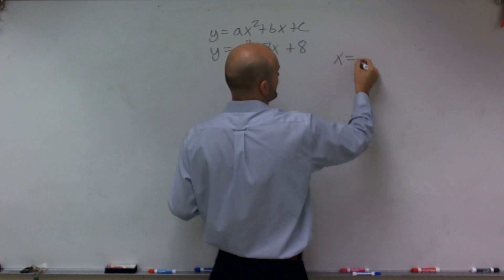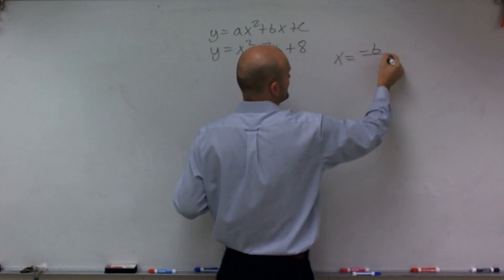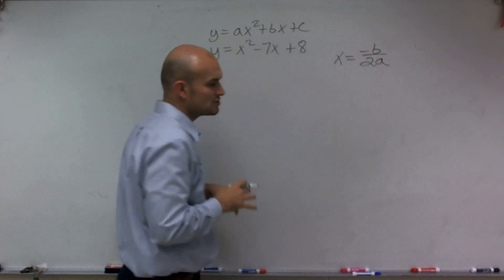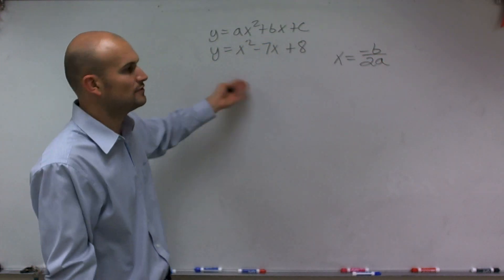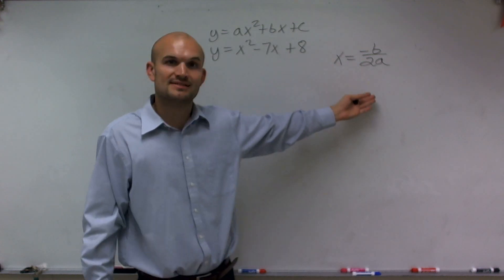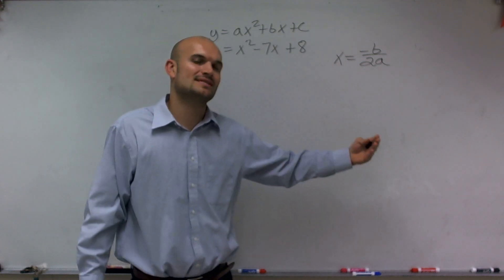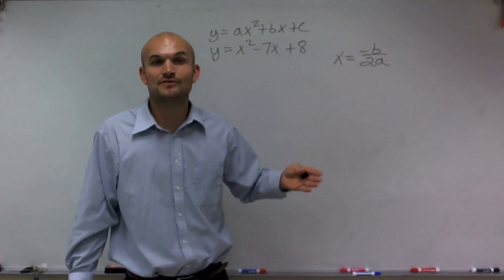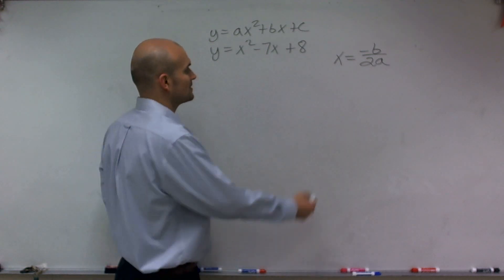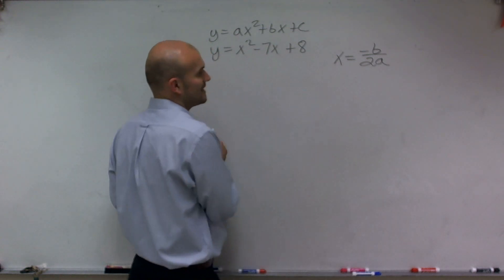So the axis of symmetry is the value of x equals to opposite of b divided by 2a. So for all quadratics, and if you would have noticed, for y equals x squared, this answer would have been zero. That's why I chose points that are negative and positive on the left and right of x equals zero. So for this equation, though, we're going to have a different axis of symmetry.